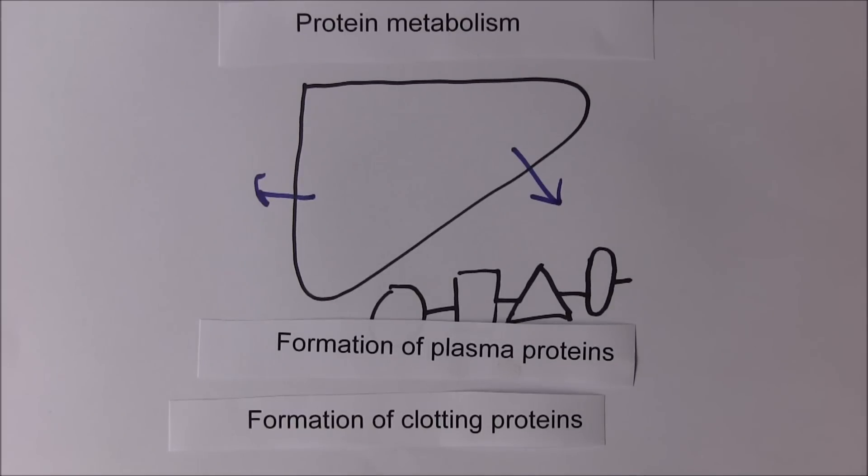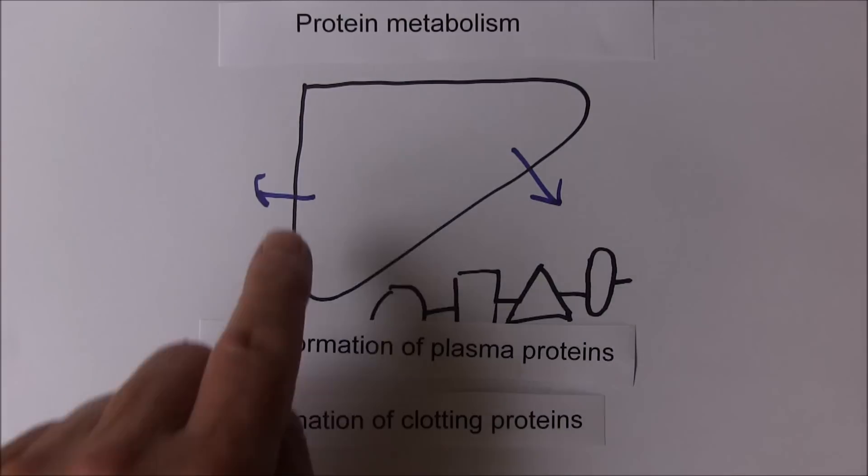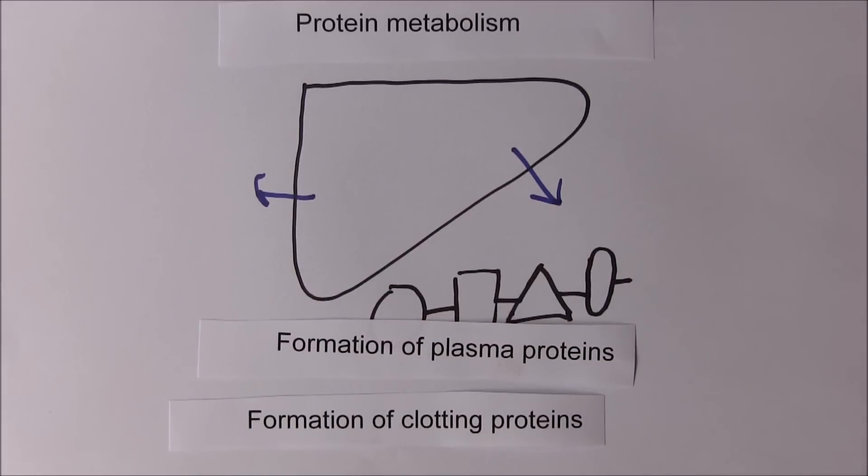In fact, the liver forms all of the plasma proteins except the immunoglobulins, the antibodies. They're produced by the B lymphocytes. Albumin is the most abundant plasma protein and it's produced by the hepatocytes and then released into the blood, as you would expect.